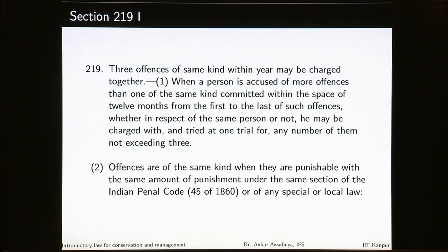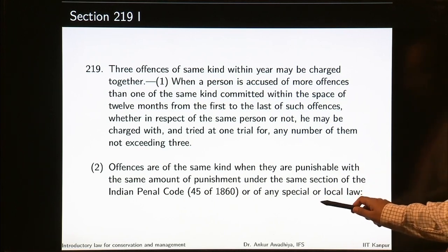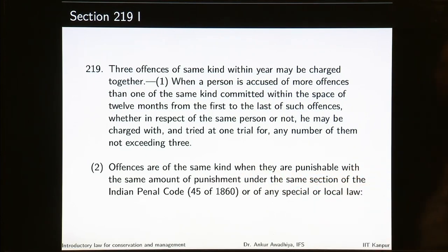Section 219 provides that when a person is accused of more offences than one of the same kind committed within 12 months from the first to the last of such offences, he may be charged with and tried at one trial for any number of them not exceeding three. Offences are of the same kind when they are punishable with the same amount of punishment under the same section of the IPC or any special or local law.